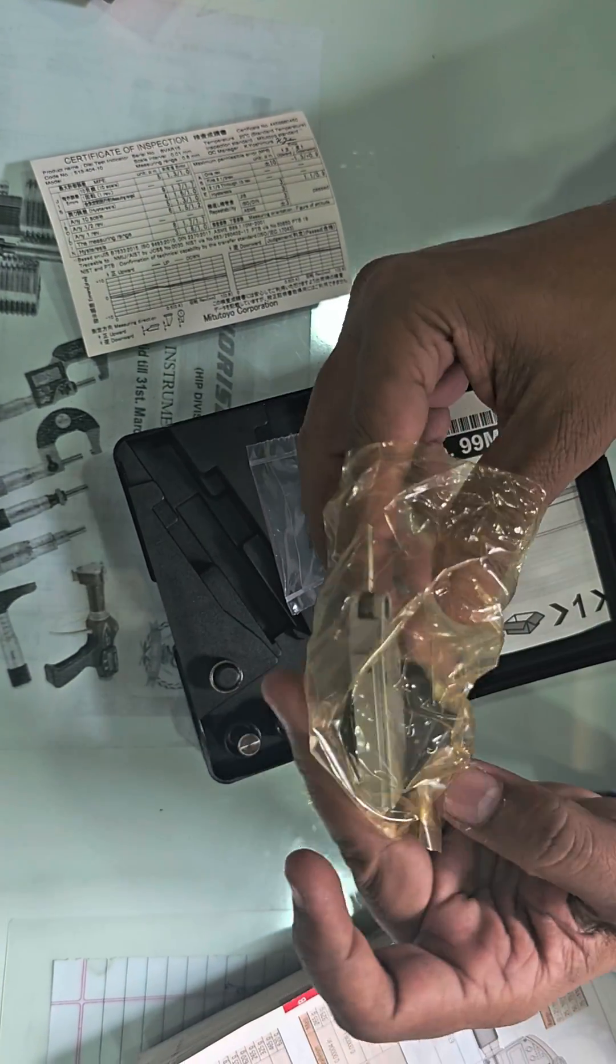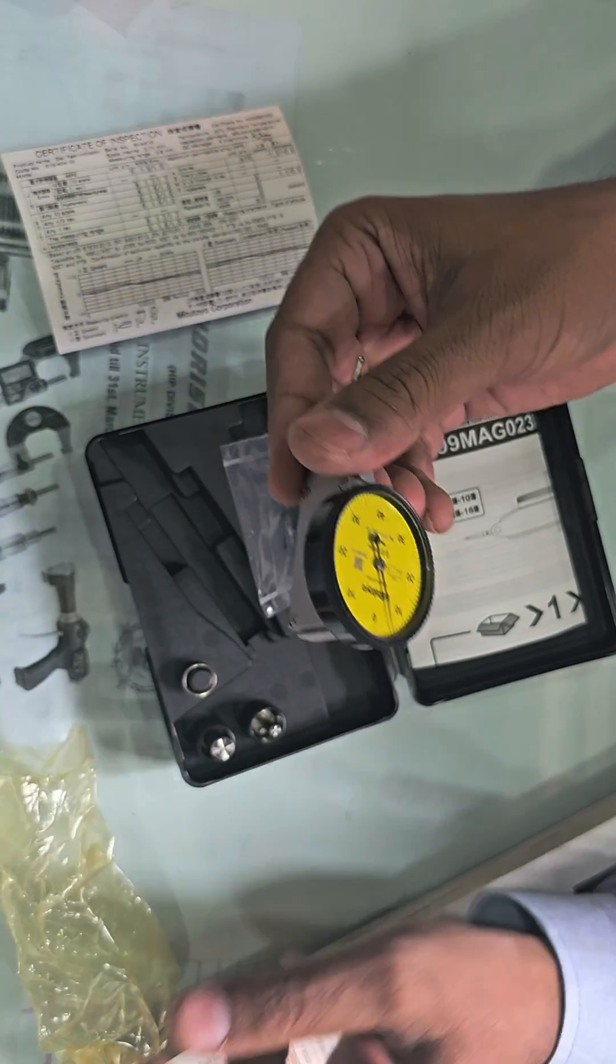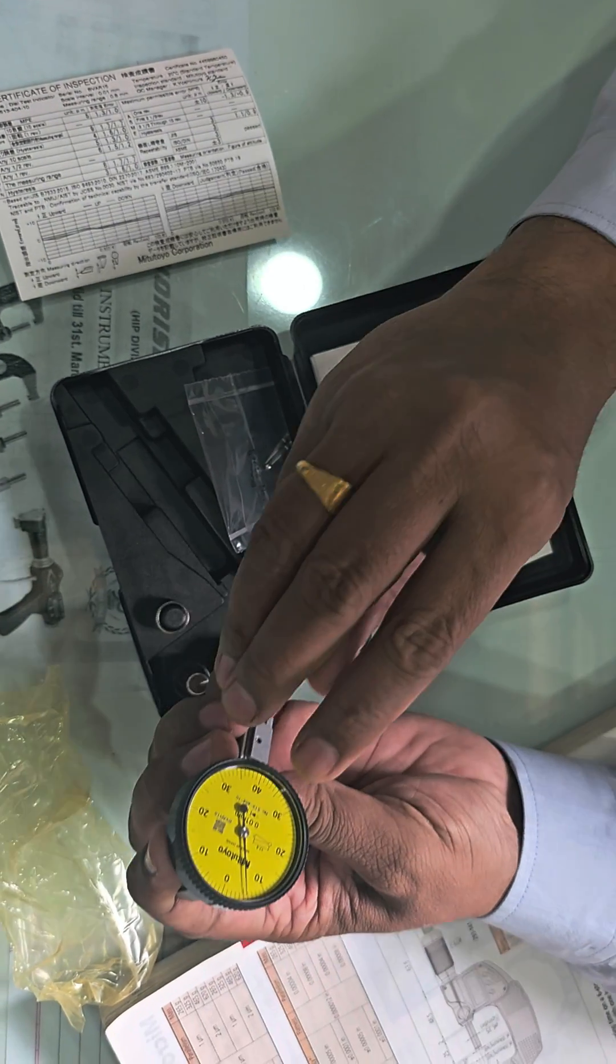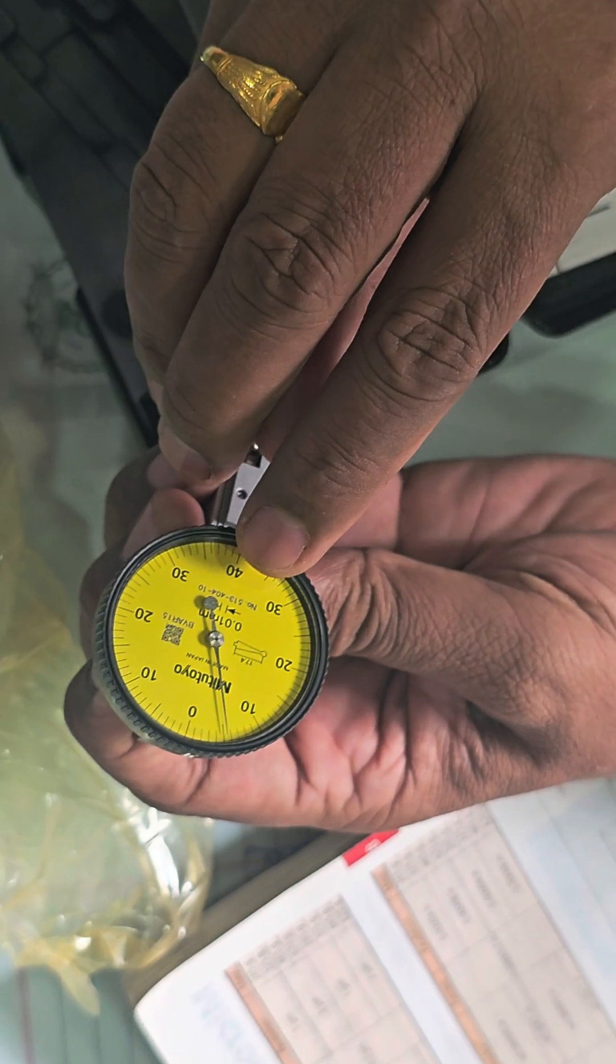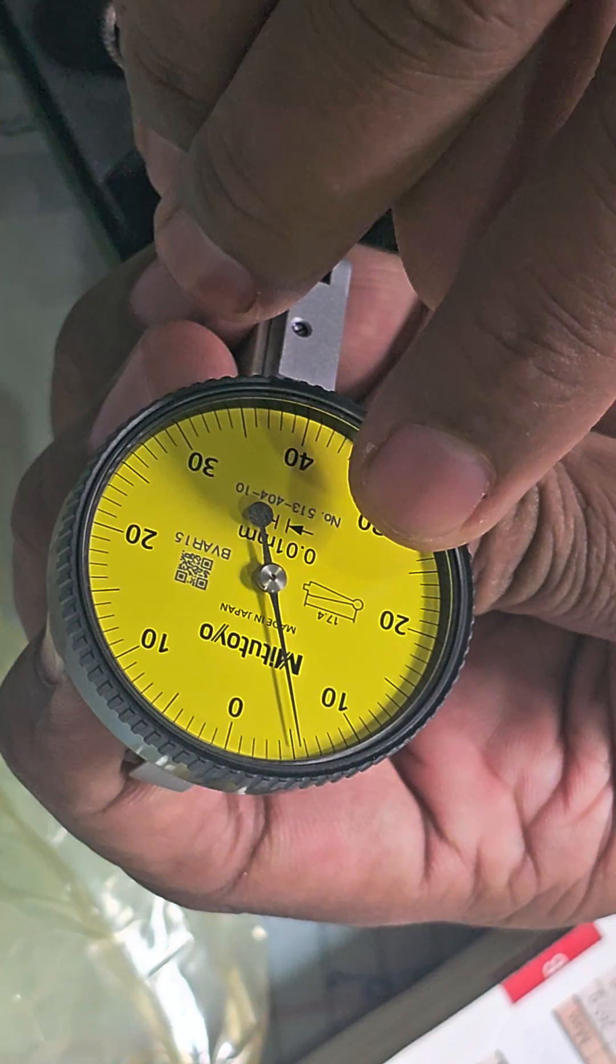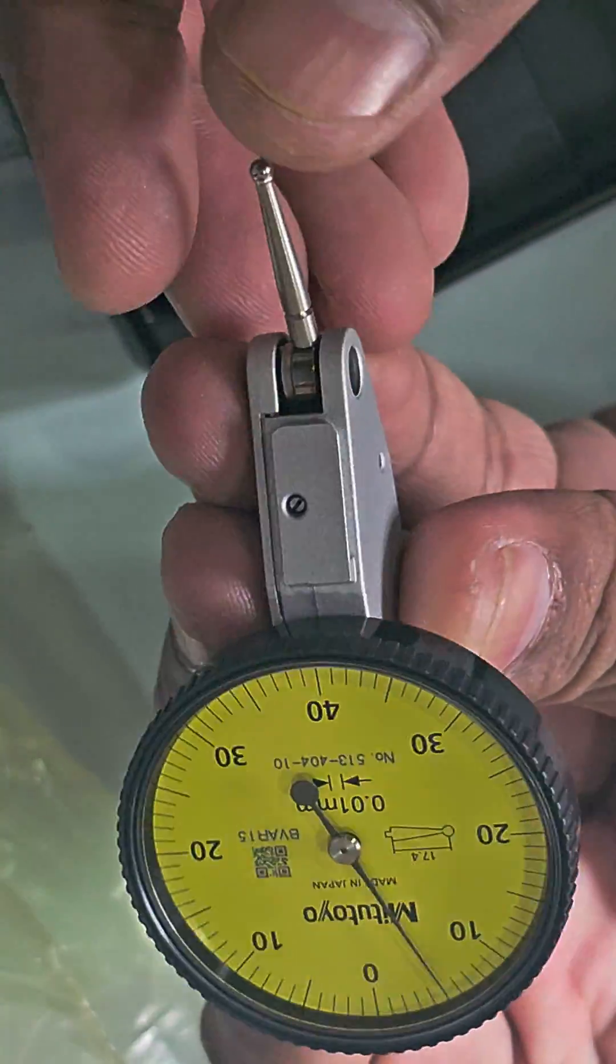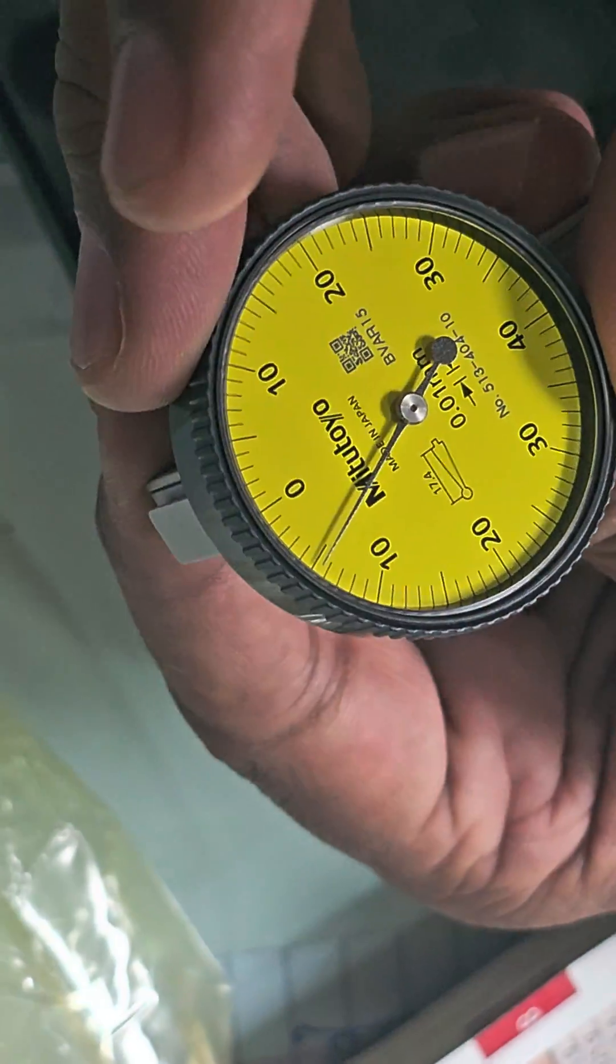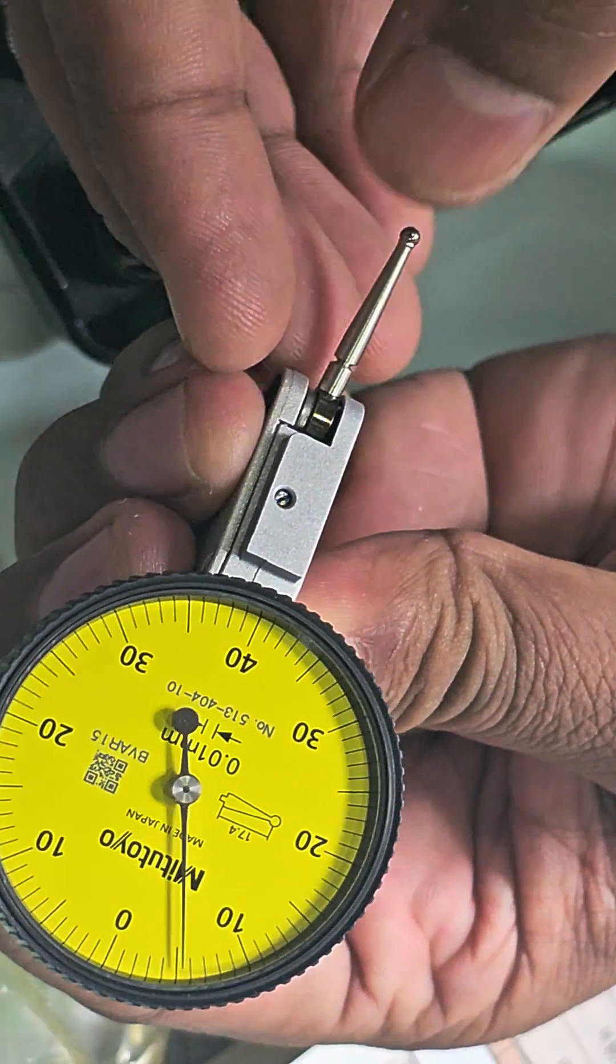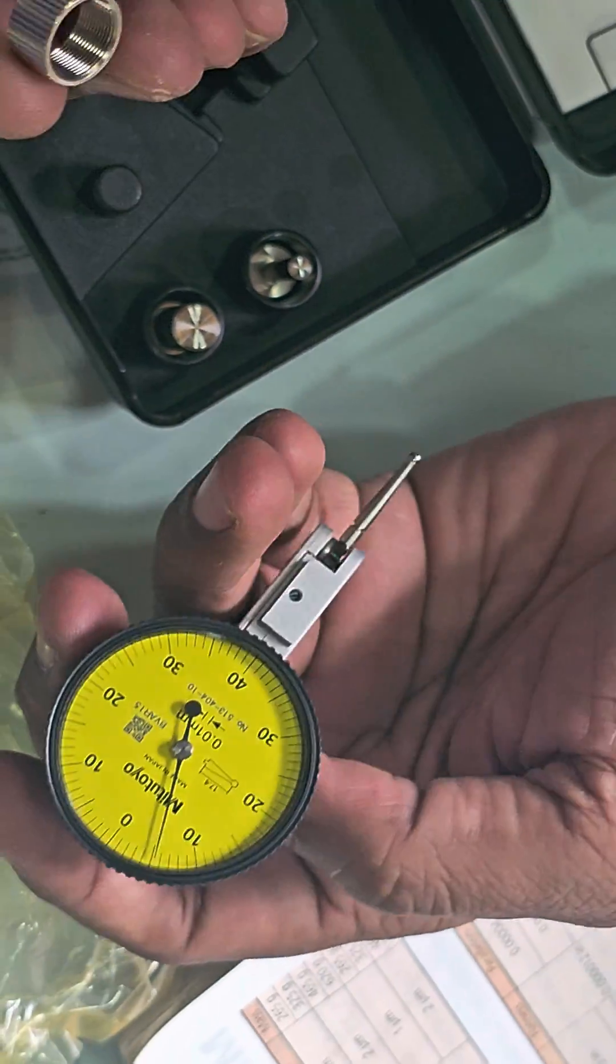Then with this serial, also order number is written 513404-10. Then stylus length is 17.4mm. Metatio marking, plastic body.